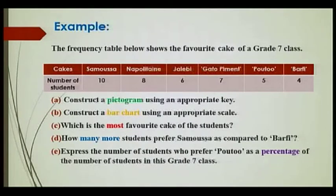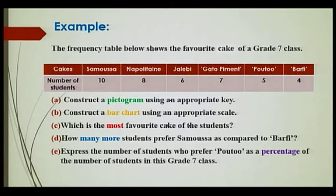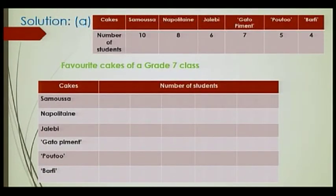Next example: the frequency table shows the favorite cakes of a grade 7 class, with different cakes and the number of students. The questions ask you to construct a pictogram using an appropriate key, construct a bar chart using an appropriate scale, identify the most favorite cake, find how many more students prefer Samosa compared to Burfi, and express the number of students who prefer Poutou as a percentage. For the pictogram, the title is 'Favorite Cakes of a Grade 7 Class.' Since we have small values, I'm going to use a key where one smiley represents 2 students.